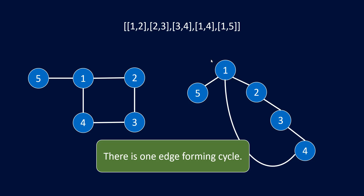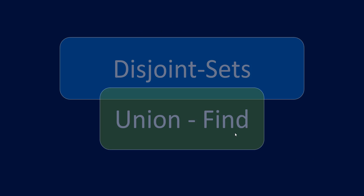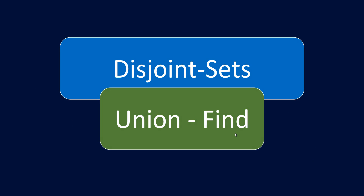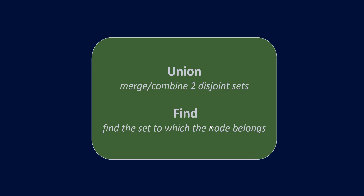The question is: how do we find this particular edge? The answer is using disjoint sets and the Union-Find method. The name itself suggests it has two parts: Union and Find. Find is going to find the set to which the node belongs, and Union is going to merge two disjointed sets.